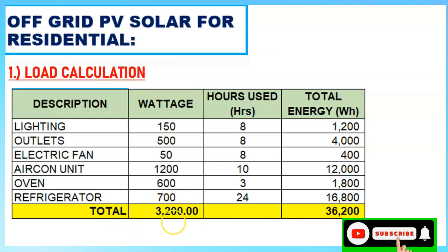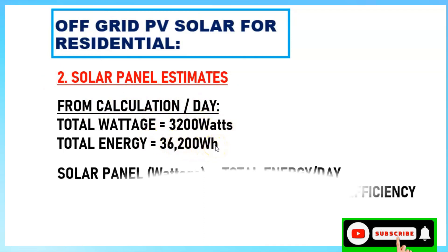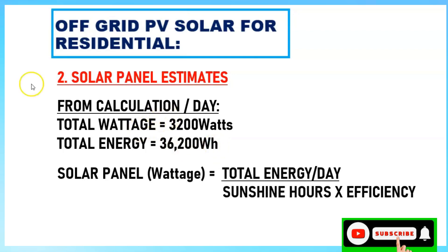Now for the solar panel estimate. From our load calculations, total wattage is 3,200 watts and total energy consumed is 36,200 watt-hours. The formula for solar panel wattage is: total energy per day divided by sunshine hours, divided by efficiency.